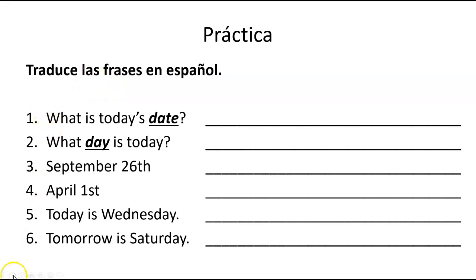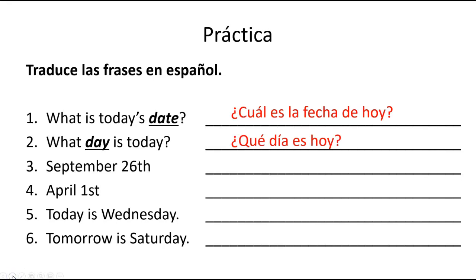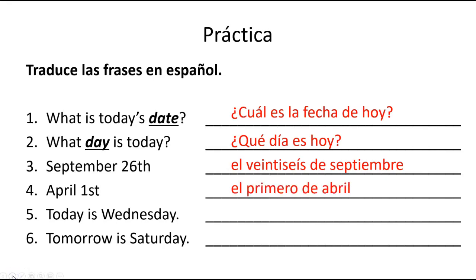What is today's date? ¿Cuál es la fecha de hoy? What day is today? ¿Qué día es hoy? September 26 — el 26 de septiembre. April 1st — we say the 1st of April — el primero de abril. Today is Wednesday — hoy es miércoles. And tomorrow is Saturday — mañana es sábado.